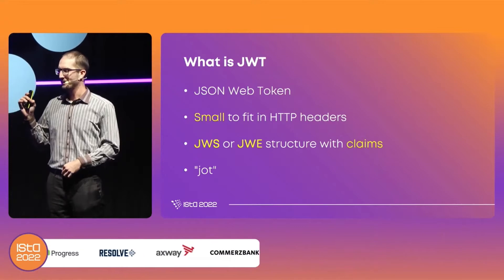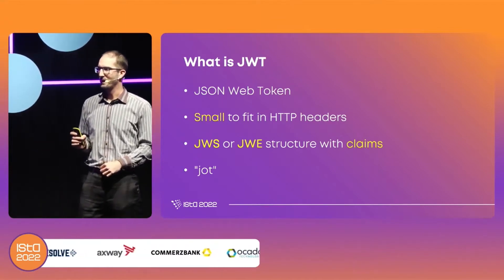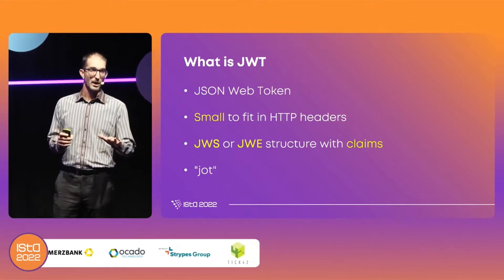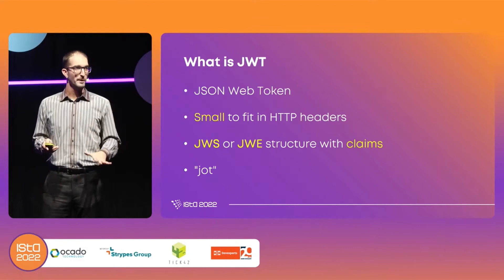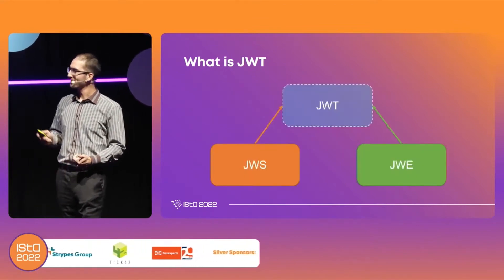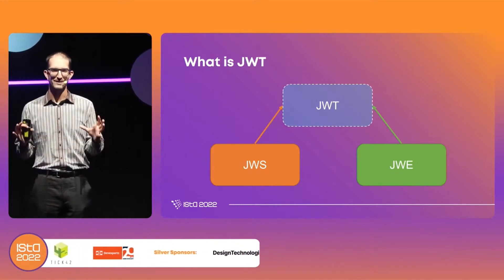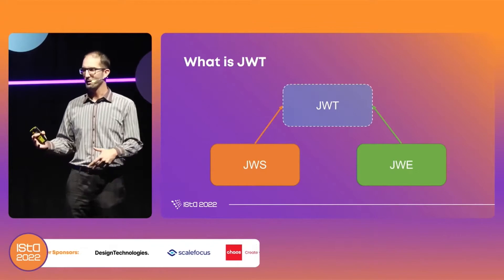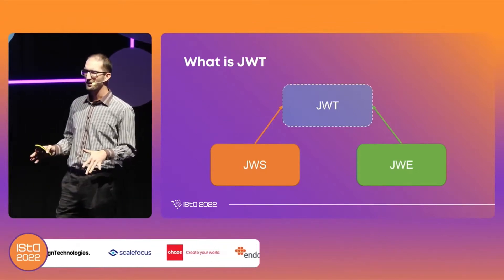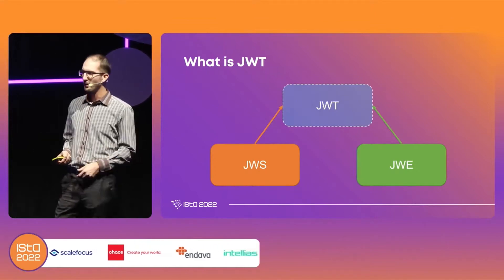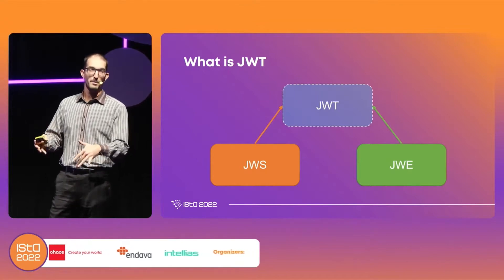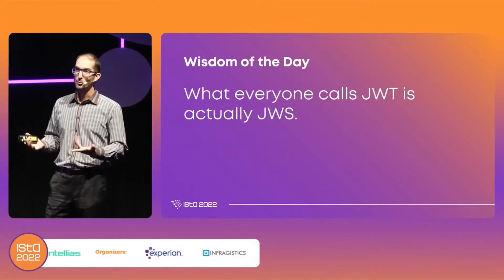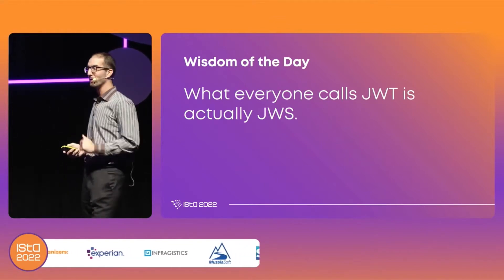JWT has two flavors: JWS and JWE, and they both have claims. Something interesting — the W in JWT is pronounced like the Greek letter omega, so it's pronounced 'jot,' though most people call it JWT. JWT is actually an abstract idea with two implementations: JSON Web Signature and JSON Web Encryption. JWS is what everybody calls JWT — JWE is rarely used. The wisdom of the day: JWT is JWS, and I'll use these two interchangeably.